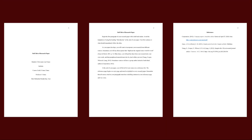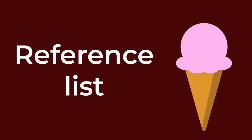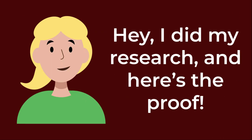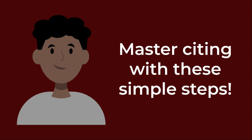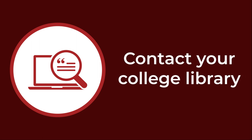Double space. Don't forget the entire document should be double-spaced, including your reference list. To sum it up, putting together a reference list is the cherry on top of your research paper — it's a simple way to say 'I did my research, and here's the proof,' and it's an important final step to give credit where it's due. It may seem confusing and complicated to properly cite your sources, but by following these simple steps, you'll have it mastered in no time. If you ever need a little more help, check out the citation and research module on the Learning Portal, or contact your college library.